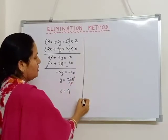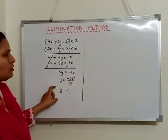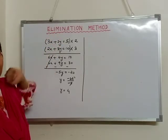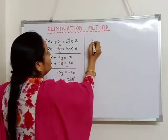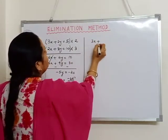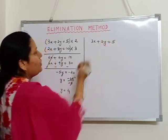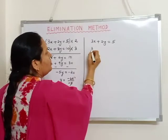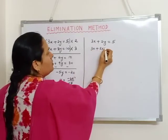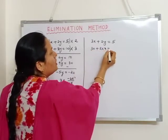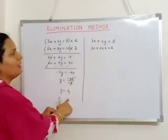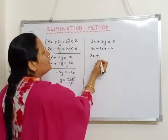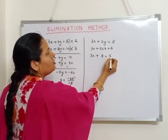Now next is the value of x. In order to find out the value of x, I have to substitute the value of y in any of the equations — either in the first equation or in the second equation. Let me substitute it in the first equation: 3x plus 2y equals to 5. Now instead of y, I have to substitute 4. So 3x plus 2 times 4 is equal to 5.